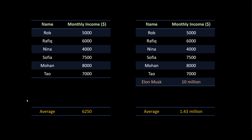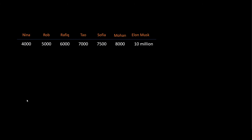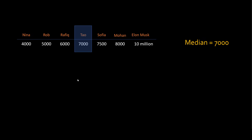So then what should we do here? Let's sort the values in ascending order. What if instead of using average, I use the middle value? So say in the dataset my middle value is 7,000. So instead of average, I'm using the middle value to make that decision. And this middle value is nothing but a median.